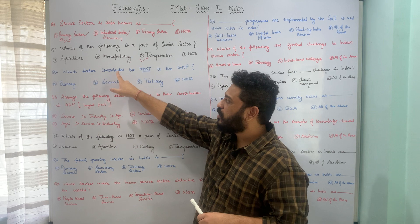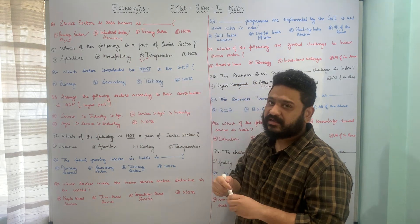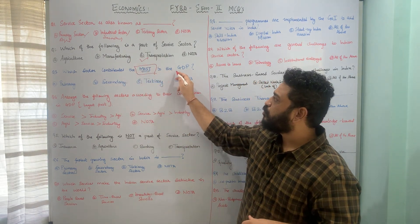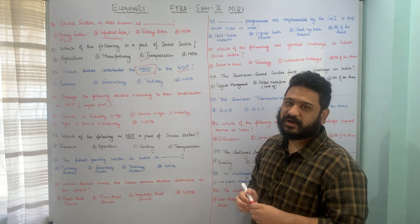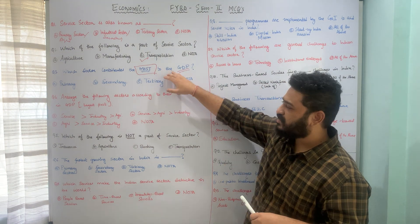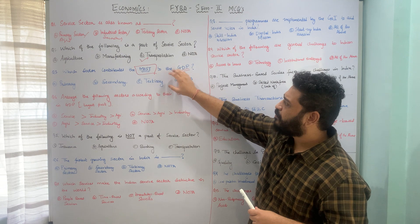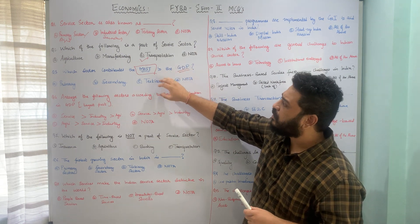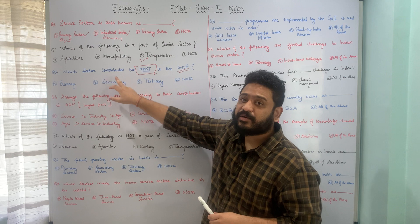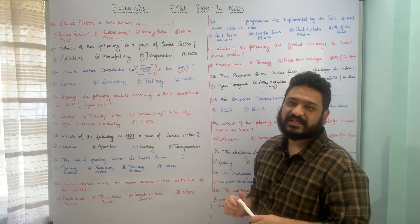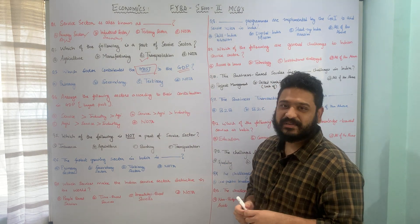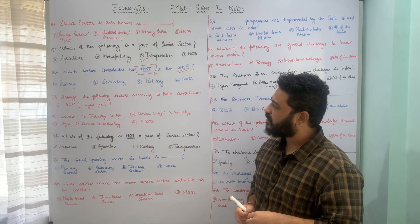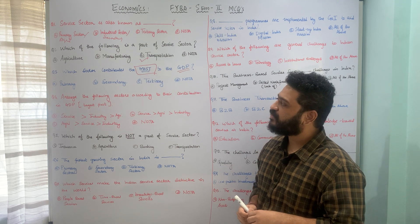Which sector contributes the most to GDP or gross domestic product in India? Whether it is A. primary sector, B. secondary sector, C. tertiary sector, or D. all of the above? The correct answer is C. tertiary sector, as the tertiary sector contributes the most to GDP in India.